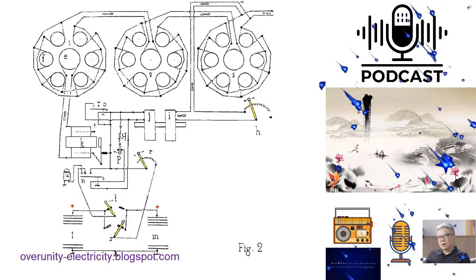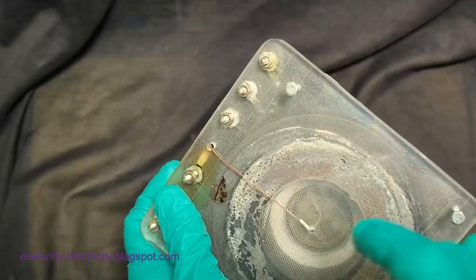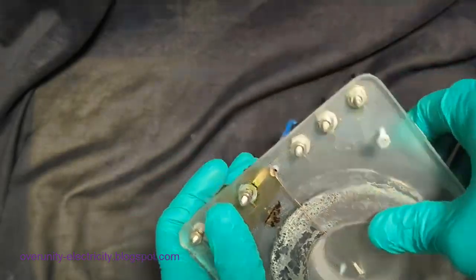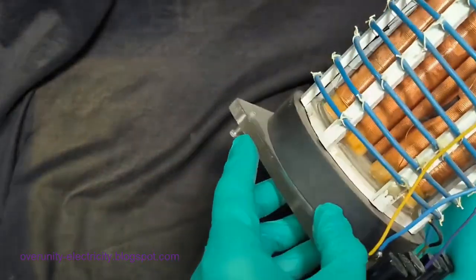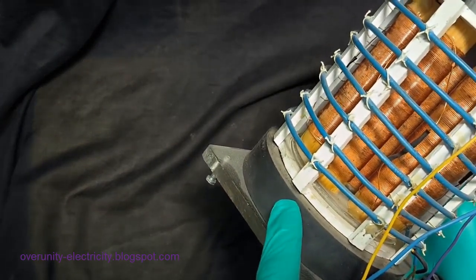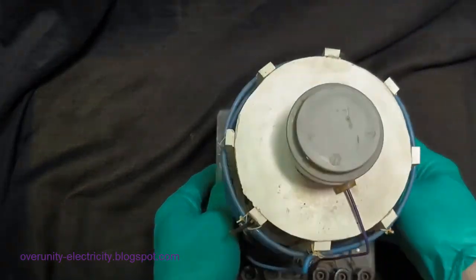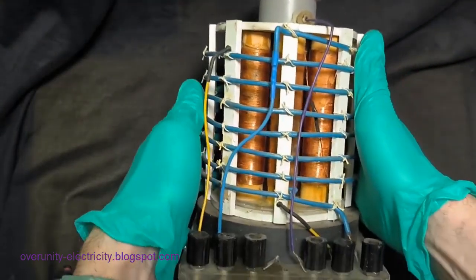The central core hosts an induction coil, meticulously wound with a specific number of turns to saturate the magnetic circuit with a predetermined induced current intensity. Each satellite core carries a coil with an identical number of turns as the central core. This unique arrangement transforms each N group formed by the central and satellite cores into an individual transformer, with the induced current in each satellite coil mirroring the power of the central induced current.